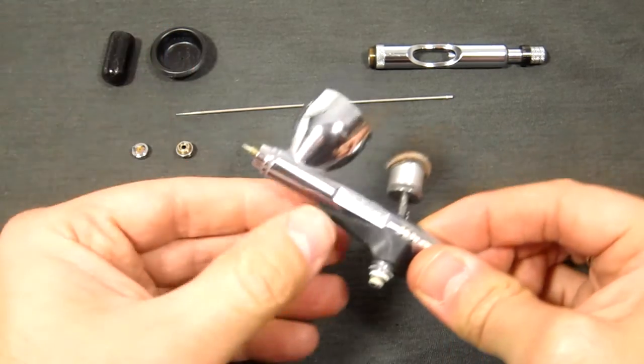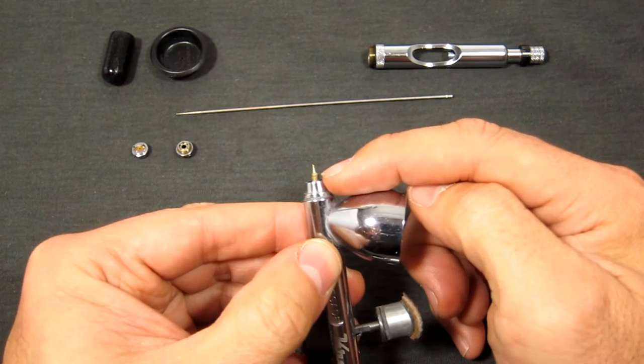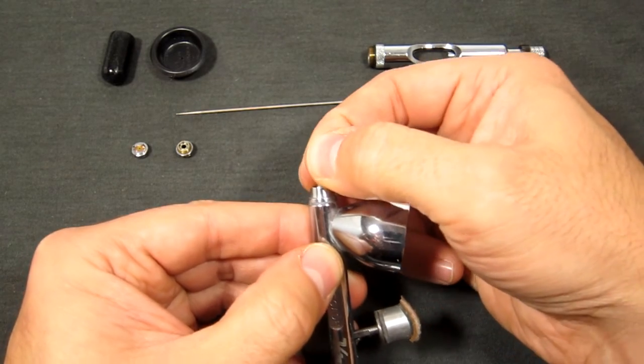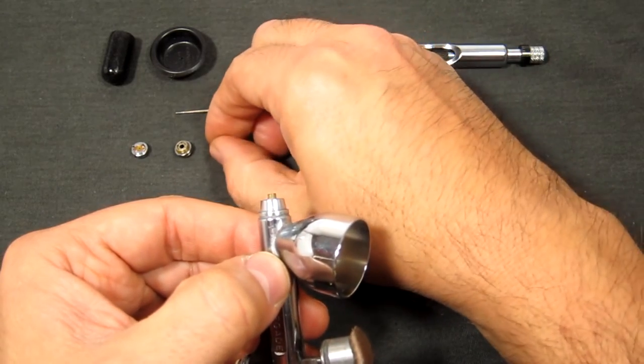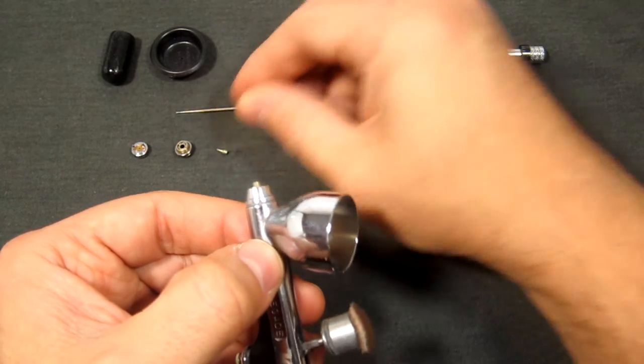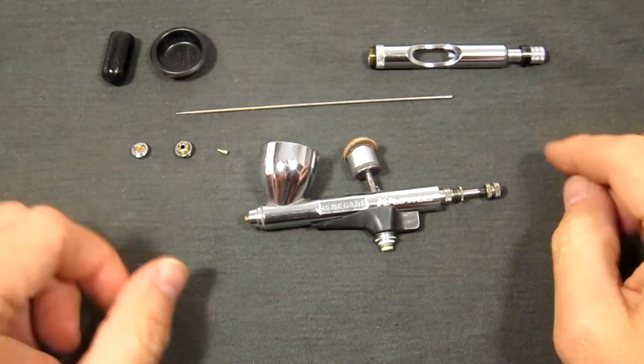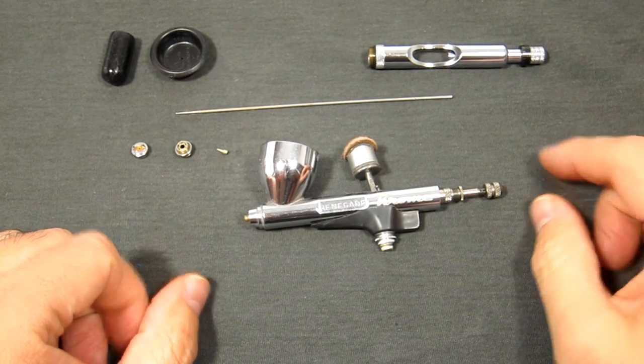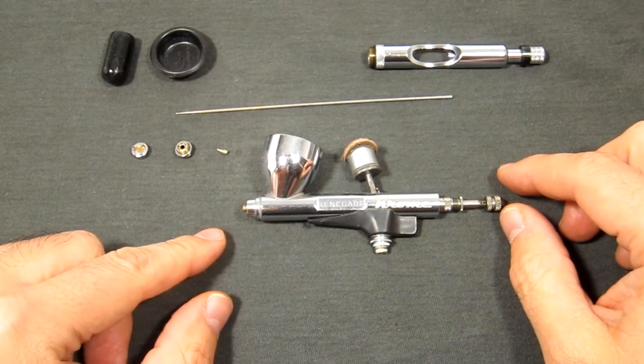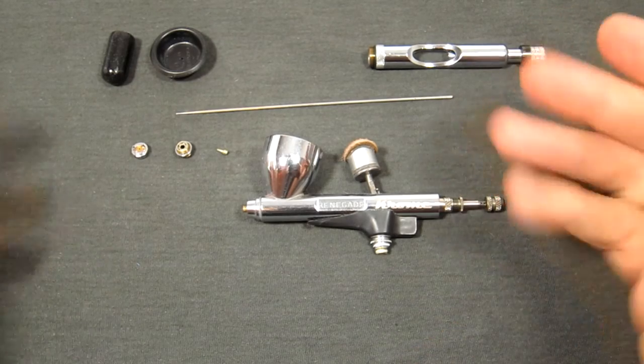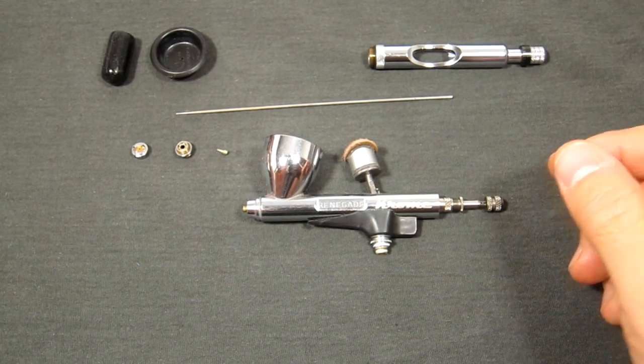And the nozzle is this tiny piece here. So if you're unfamiliar with these, that is the nozzle. Now that is the most that you'll generally need to take apart for just general cleaning.